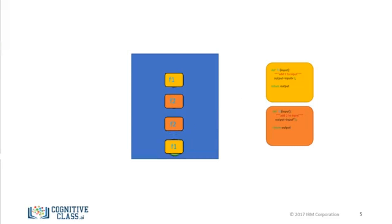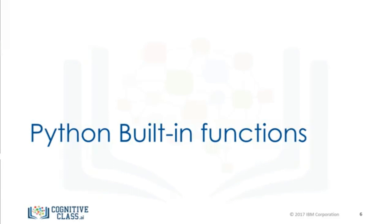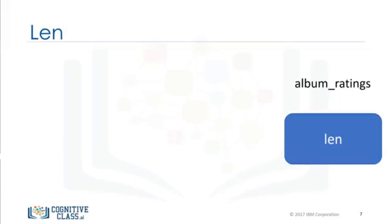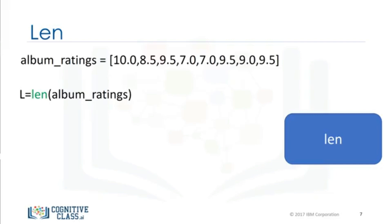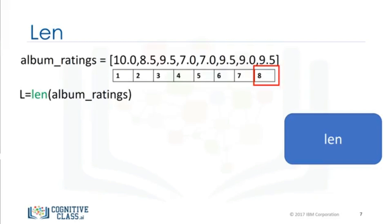Python has many built-in functions. You don't have to know how those functions work internally, but simply what task those functions perform. The function len takes in an input of type sequence, such as a string or list, or type collection such as a dictionary or set, and returns the length of that sequence or collection. Consider the following list. The len function takes this list as an argument, and we assign the result to the variable l. The function determines there are 8 items in the list, then returns the length of the list — in this case 8.